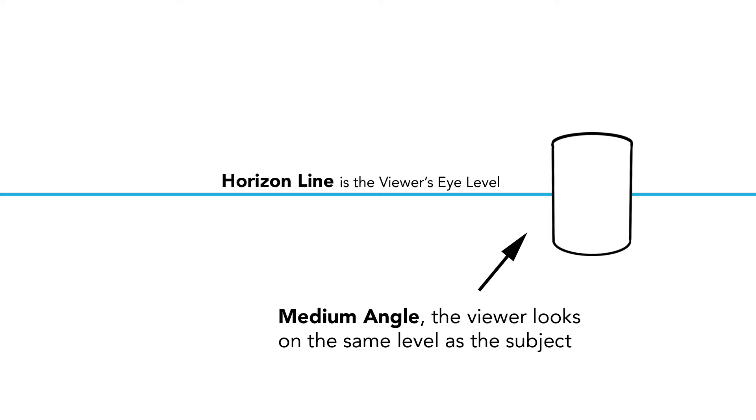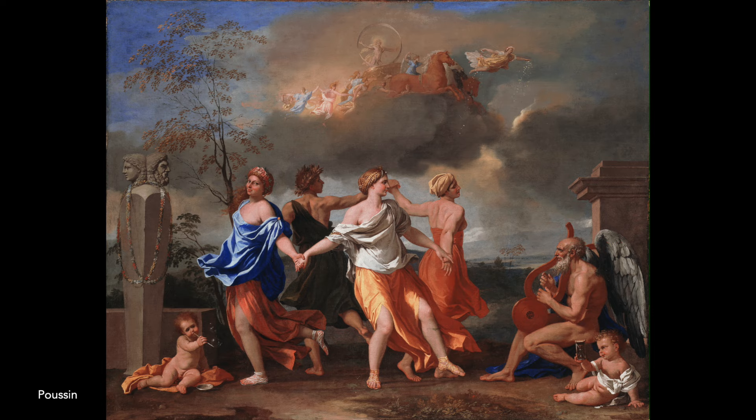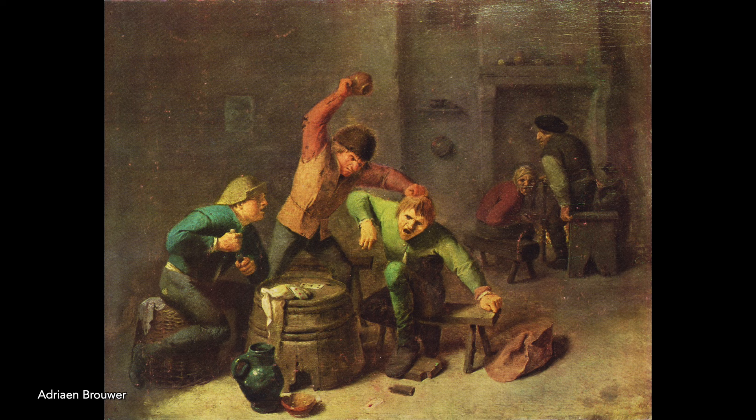And of course, a medium-angle shot is very commonly used. It makes the viewer feel like he's the equal of the characters in the scene. Welcome to our world, dear viewer. The direction in which a character is looking also has important psychological ramifications.